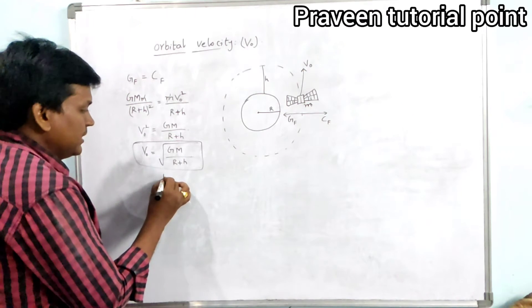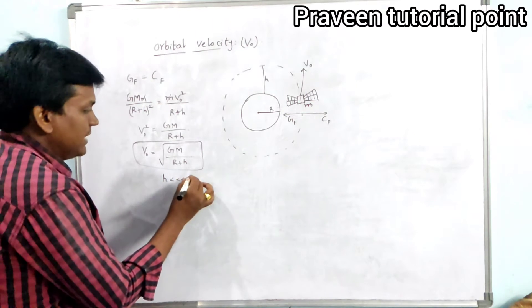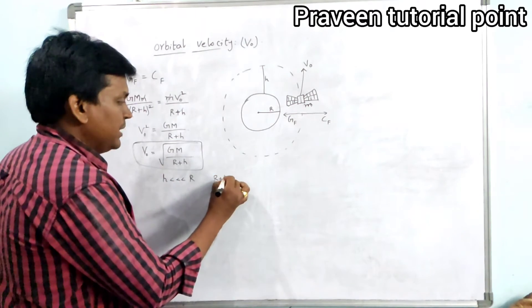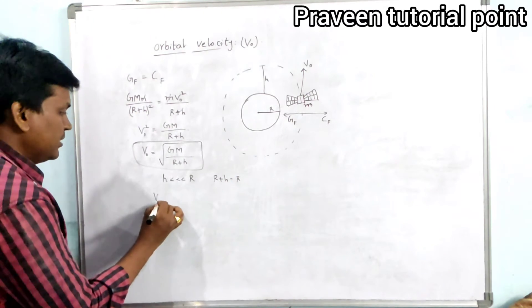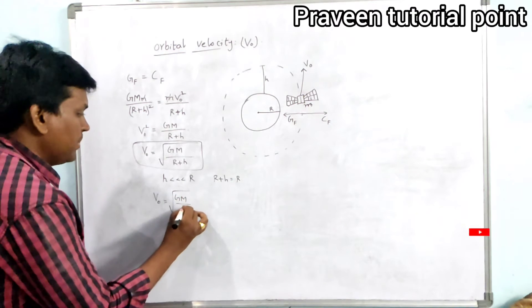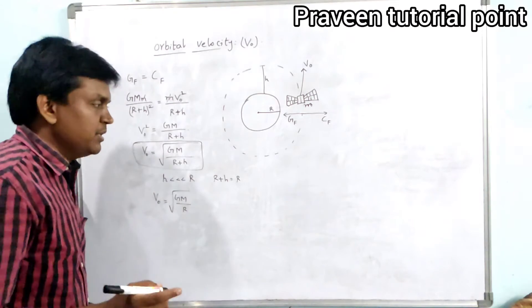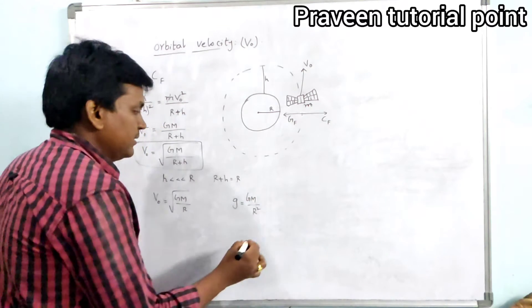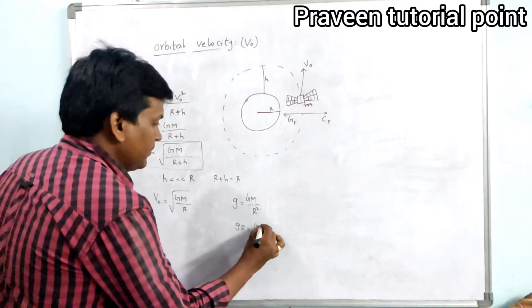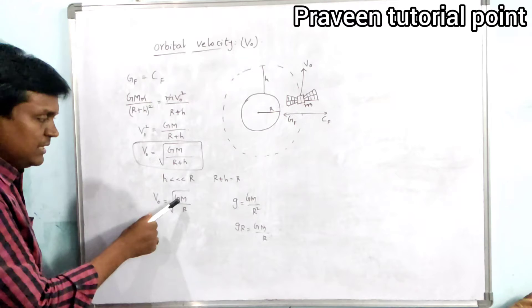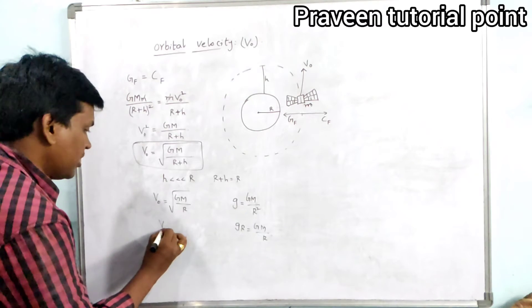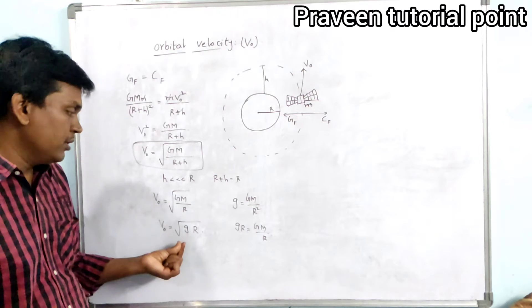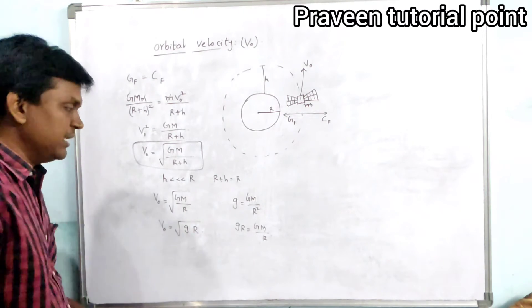Since the height of the satellite is much less than the radius of the Earth, (r+h) can be written as r. That means V₀ equals root over GM by r. We know the relation between small g and capital G: small g equals GM by r², so GM by r equals g·r. Therefore orbital velocity V₀ equals root over g·r.